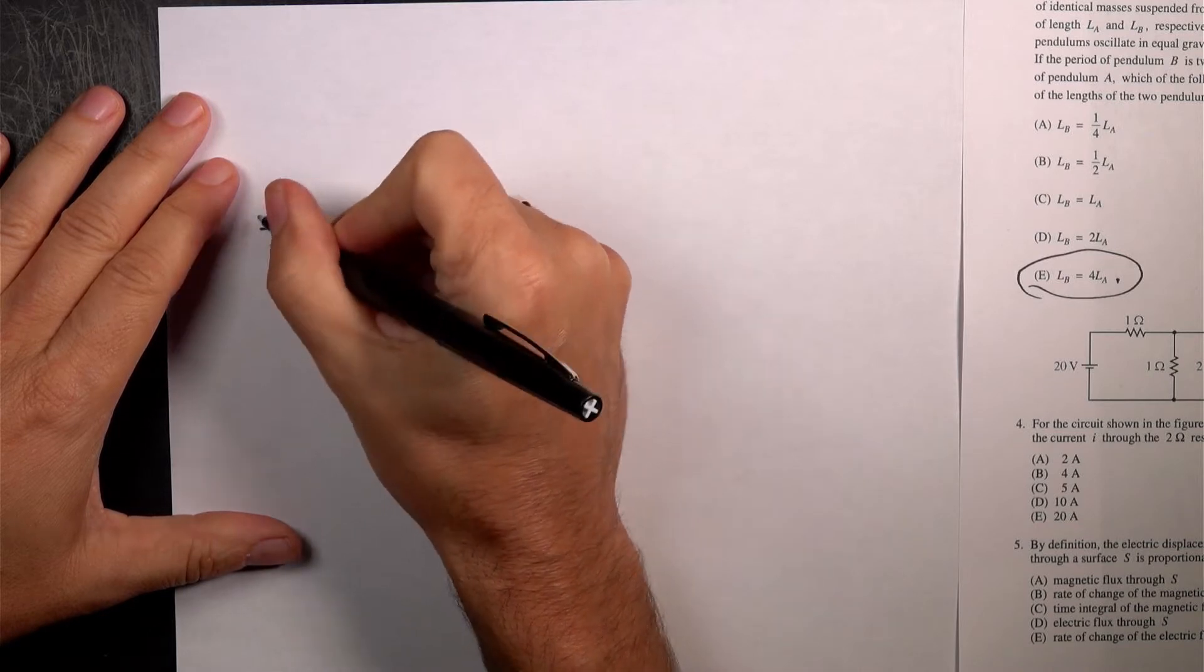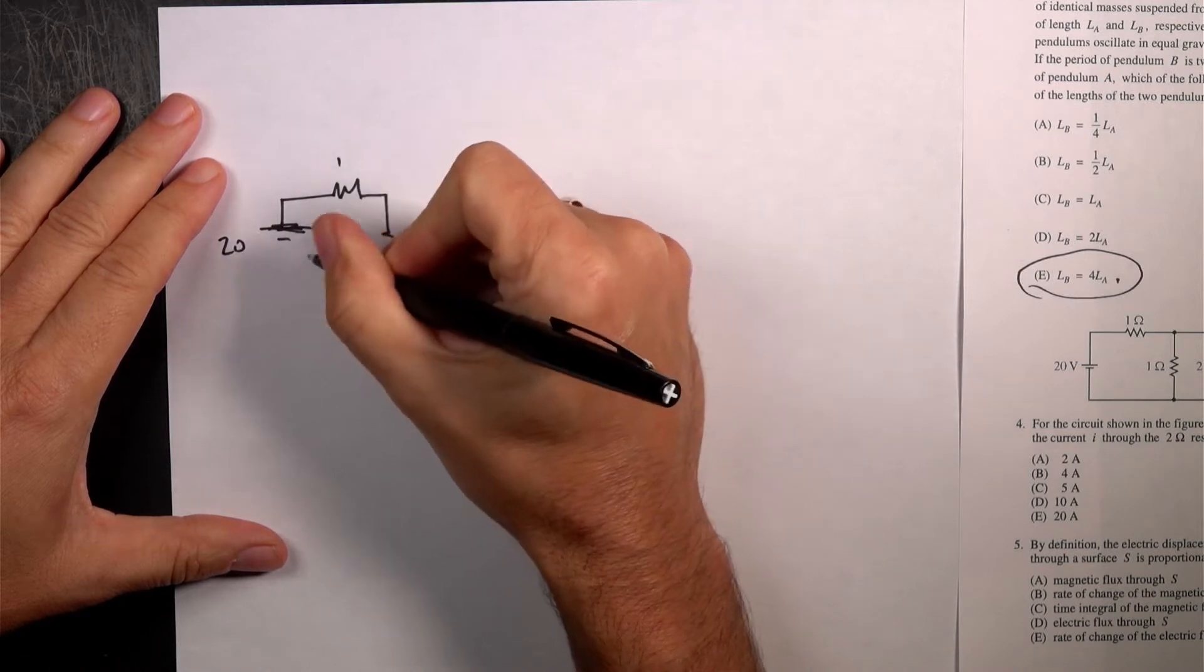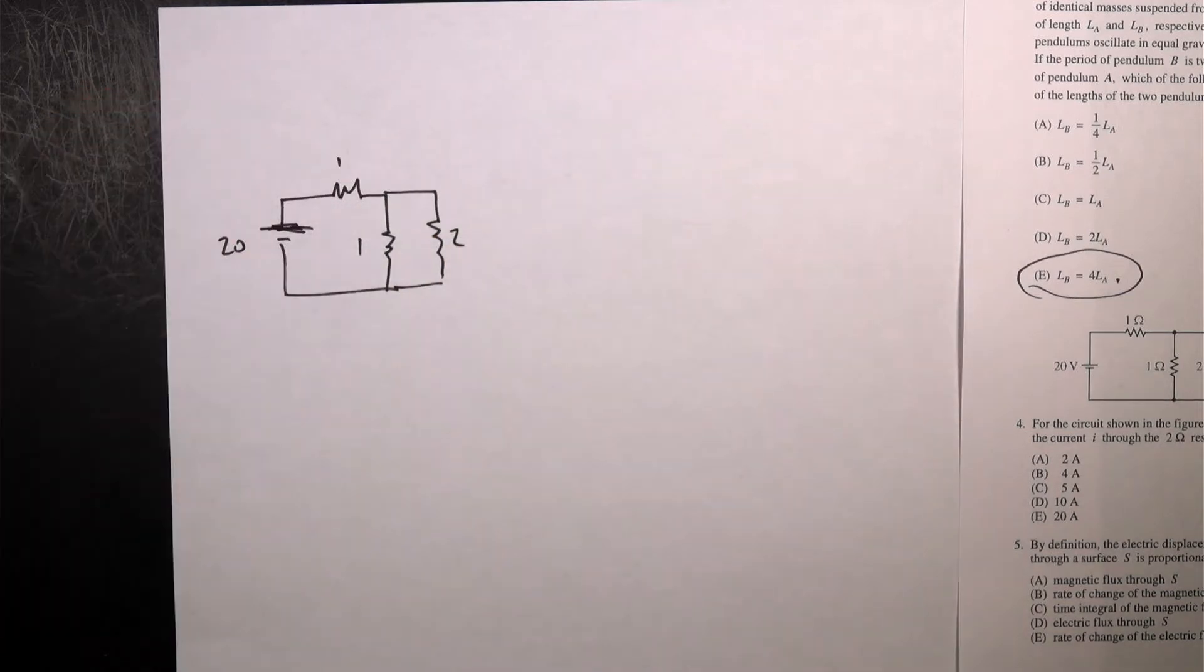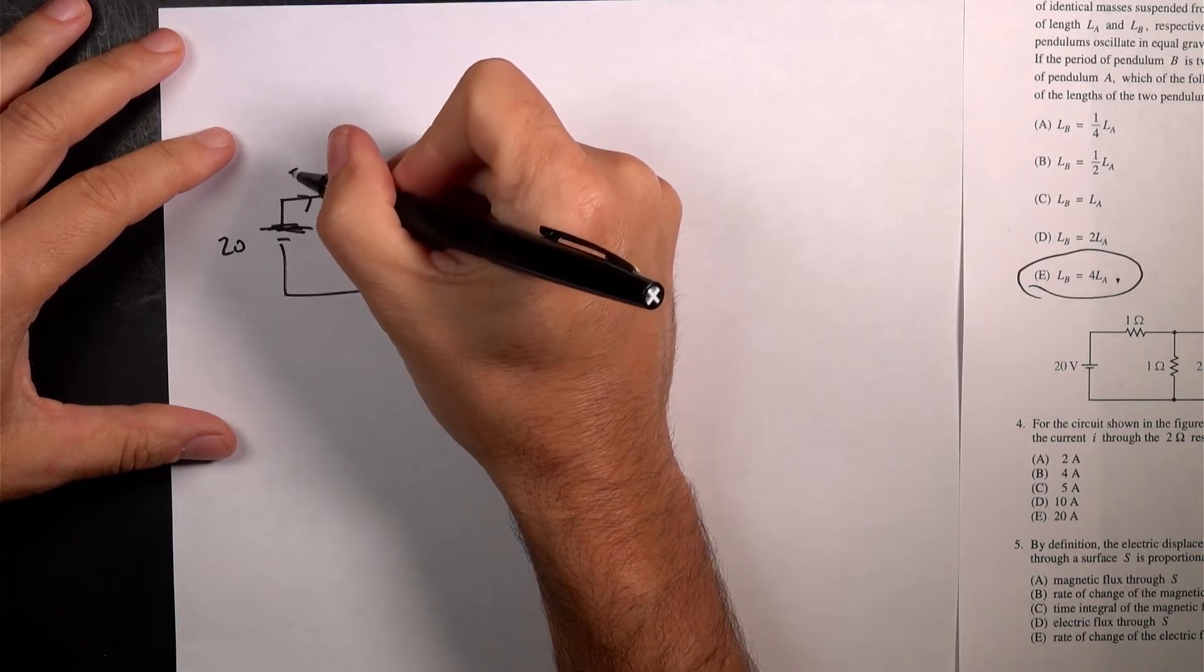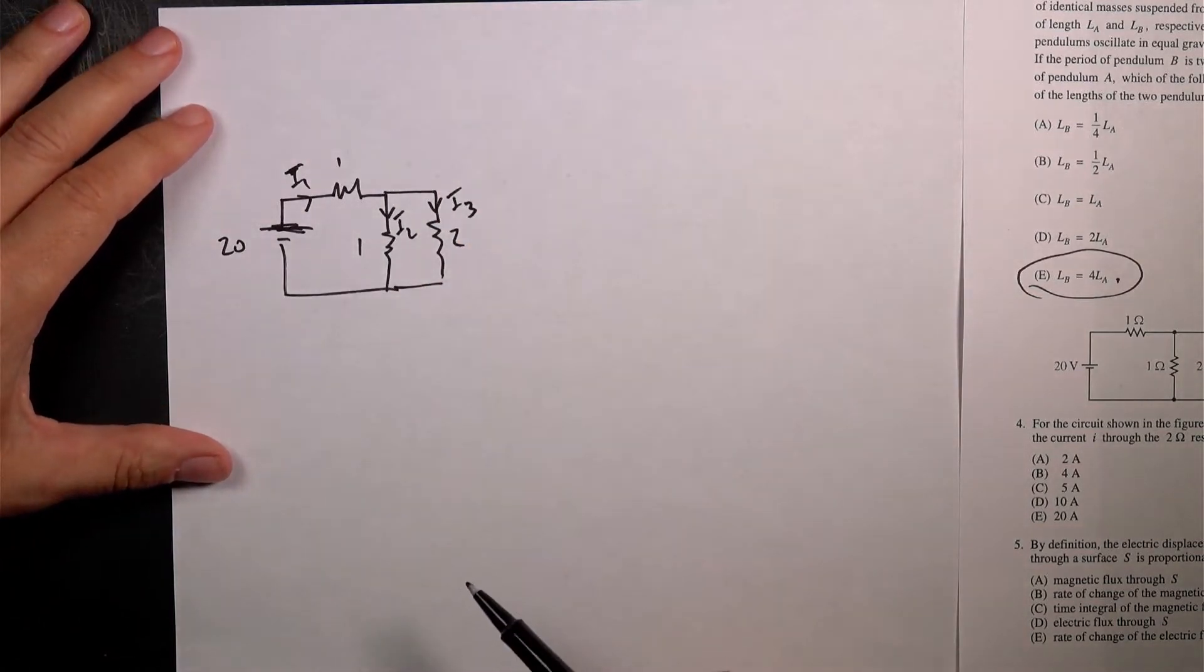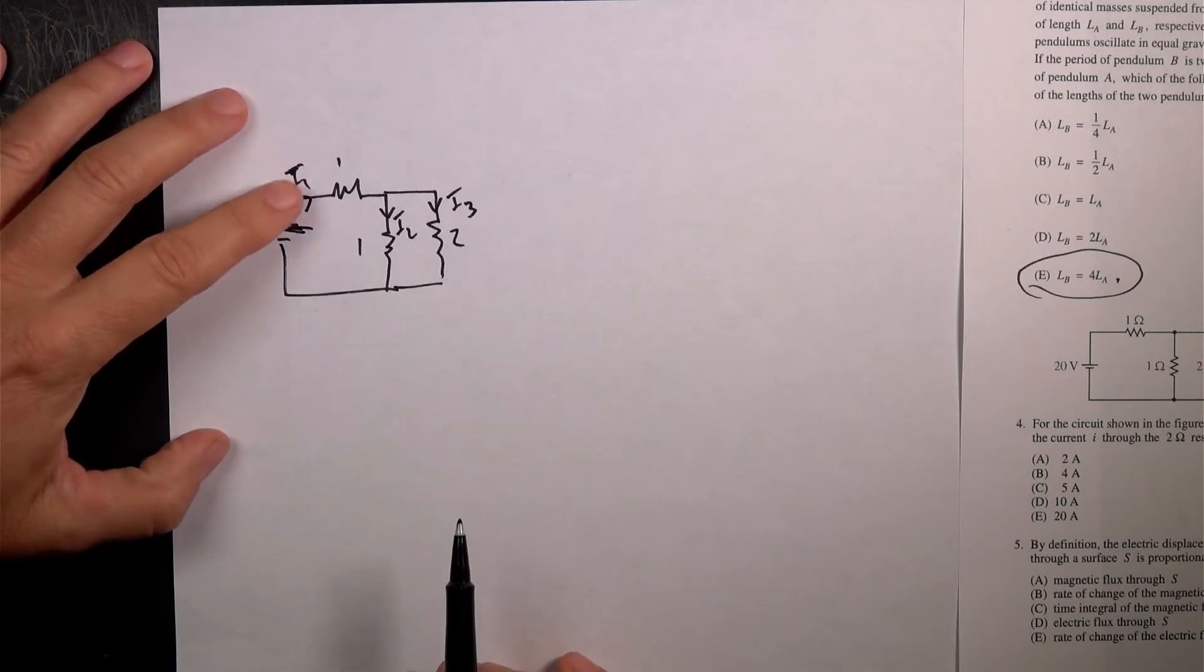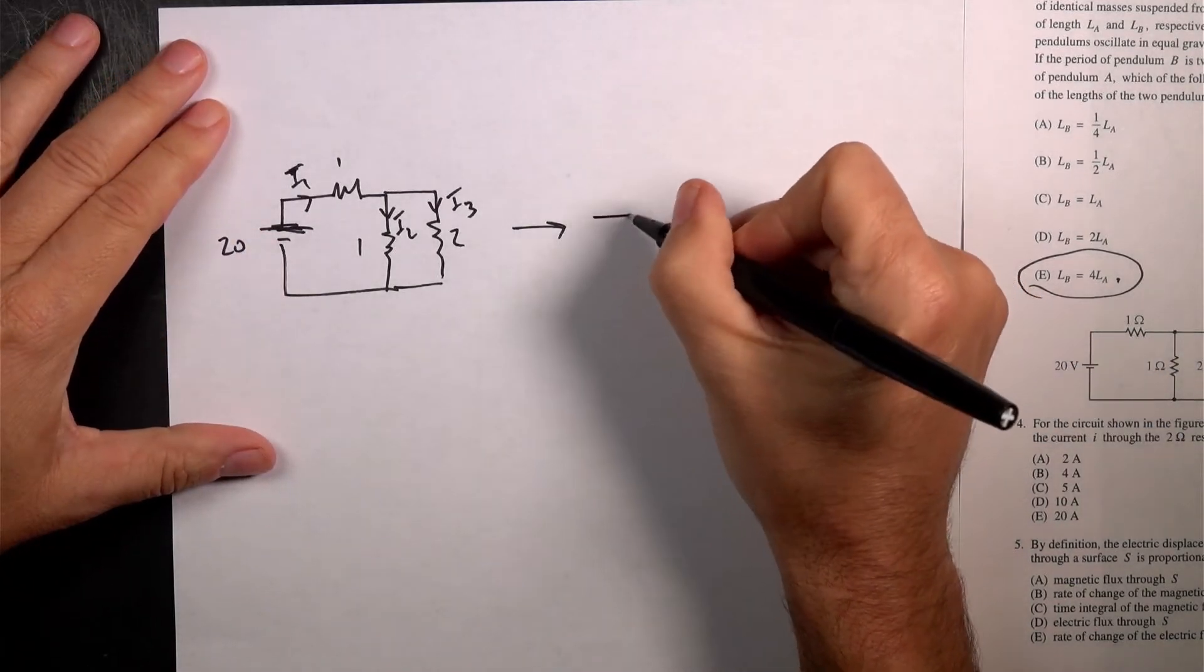I wouldn't draw the picture. So I have 20 volts, I have a 1 ohm, I have a 1 ohm, 1, 1, and then I have a 2. So what I want to do, you could do the following. You could say there's I, they use lowercase I, I use capital I, I1, I2, I3. And then you could use the loop and junction rule to solve this system of equations. It's not too bad. But what I'm going to do is find I1. I'm going to find the current coming out of the battery. And to do that, I'm going to change this into an equivalent circuit.